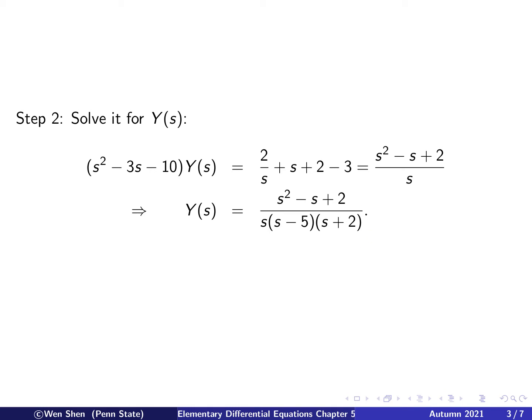So we have an expression for Y(s) as a fraction where numerator and denominators are polynomials — the numerator is degree 2 and the denominator is degree 3. There are three factors in the denominator. The factors (s minus 5) and (s plus 2) come from the characteristic equation, and the factor s comes from the source term of the differential equation.